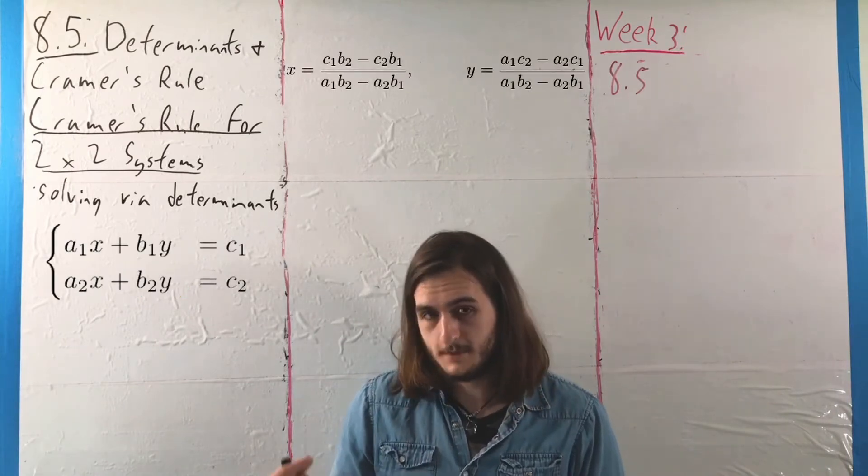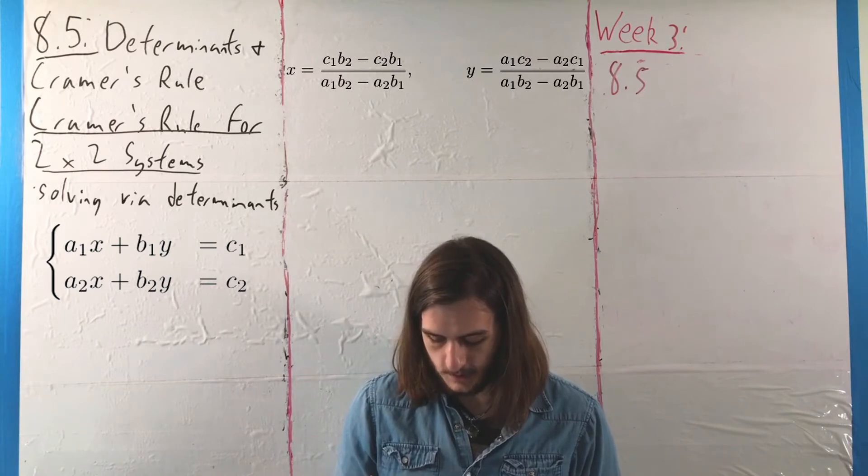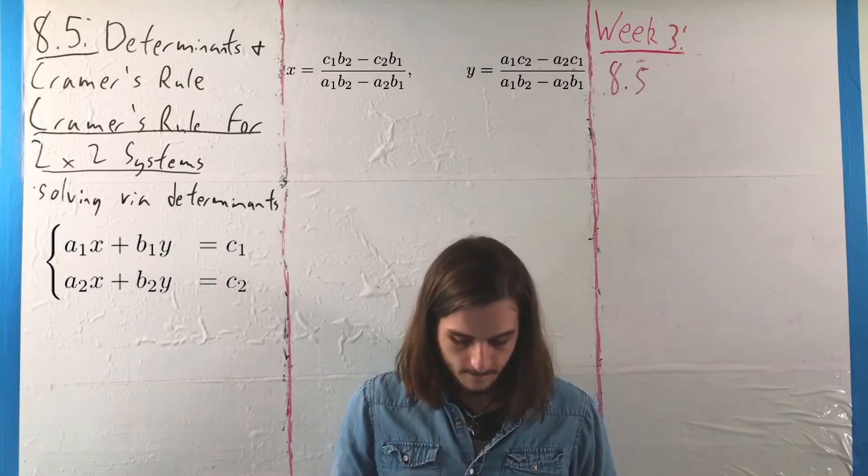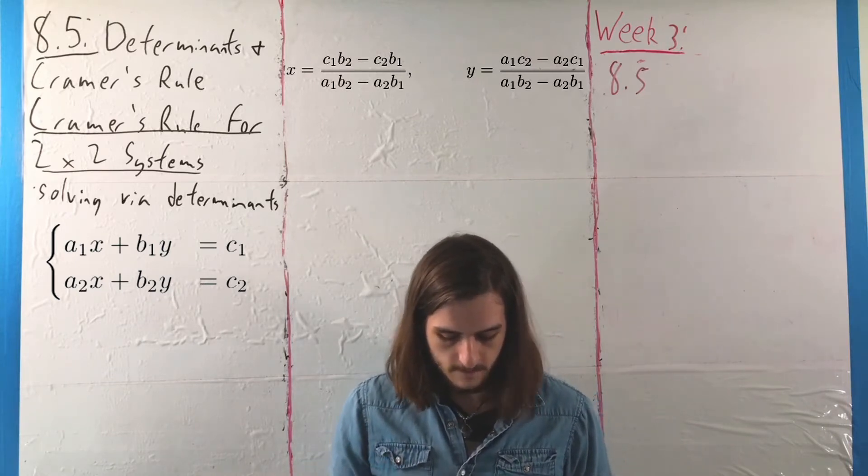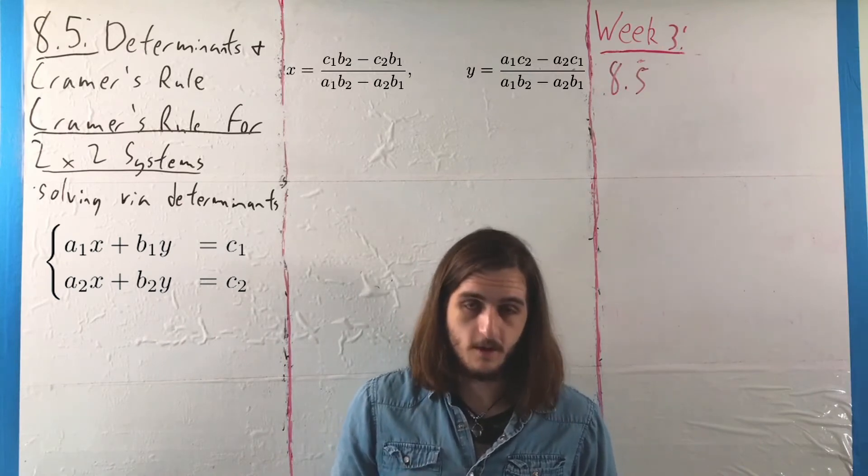twice. And get that similarly, y is equal to A1C2 minus A2C1 over A1B2 minus A2B1.